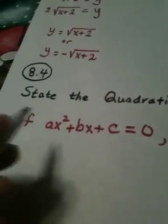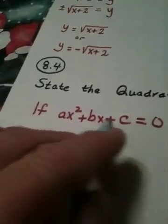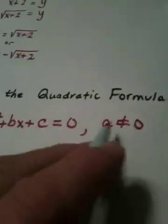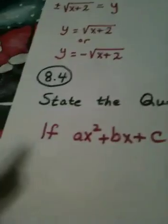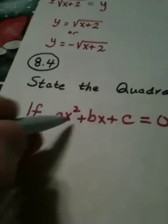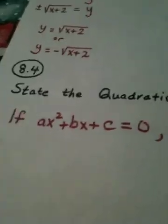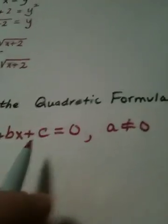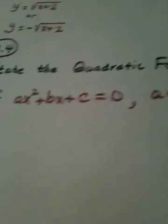If I have a quadratic equation in standard form—it has to be in standard form—notice a cannot be zero, because if a were zero, the squared term would drop out and it wouldn't even be a quadratic. So if I have a quadratic equation in standard form, the leading coefficient is not zero.